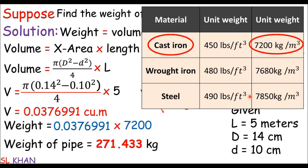So this is how we determine the weight of a pipe. No problem if it's made of any material. That's the same process. The only thing that will be changed in the process is just the unit weight.